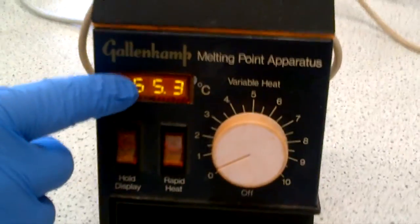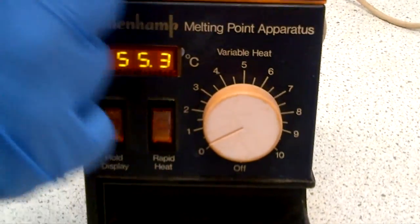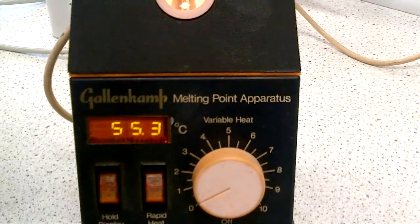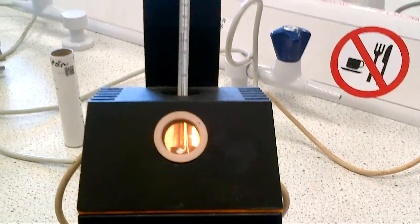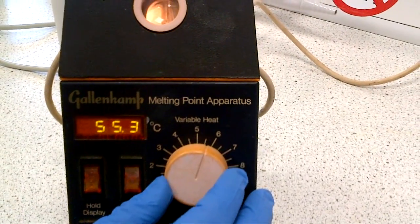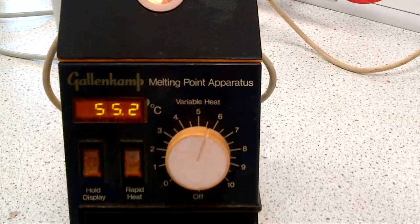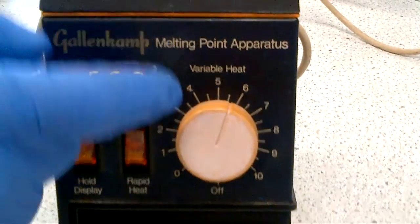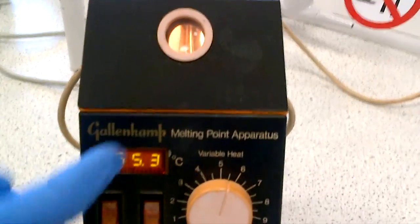And because we're now heating, this says 55.3 degrees C, and on my thermometer I'm up to 55. What I am going to do is to put it on to 5 to 6 quickly, and we need to get it to about 150, 160.